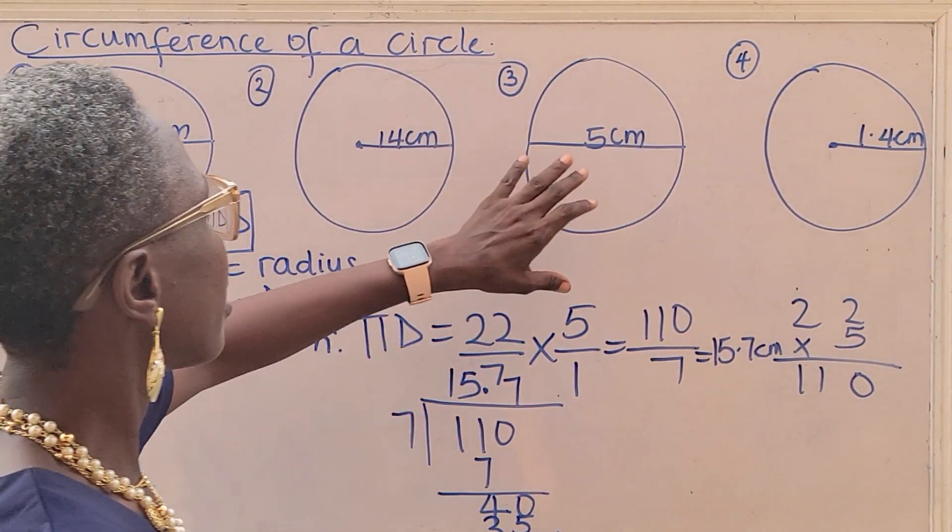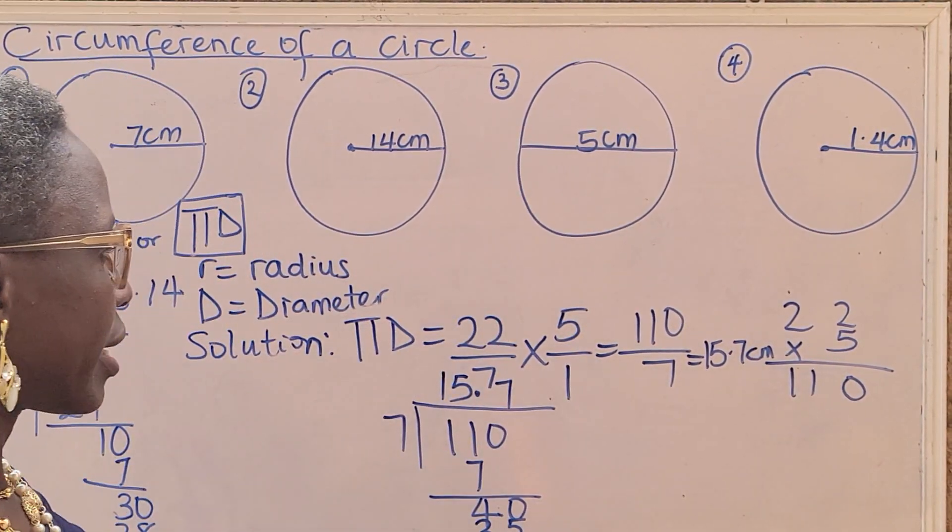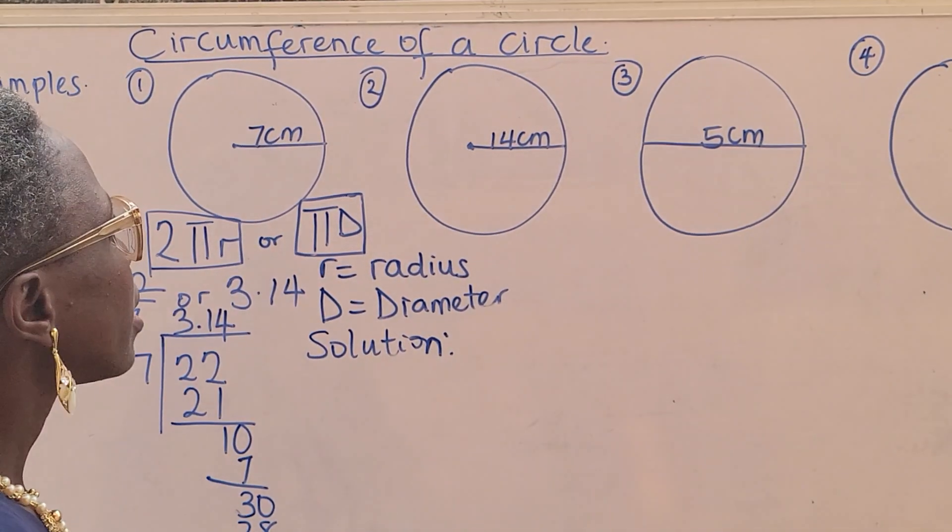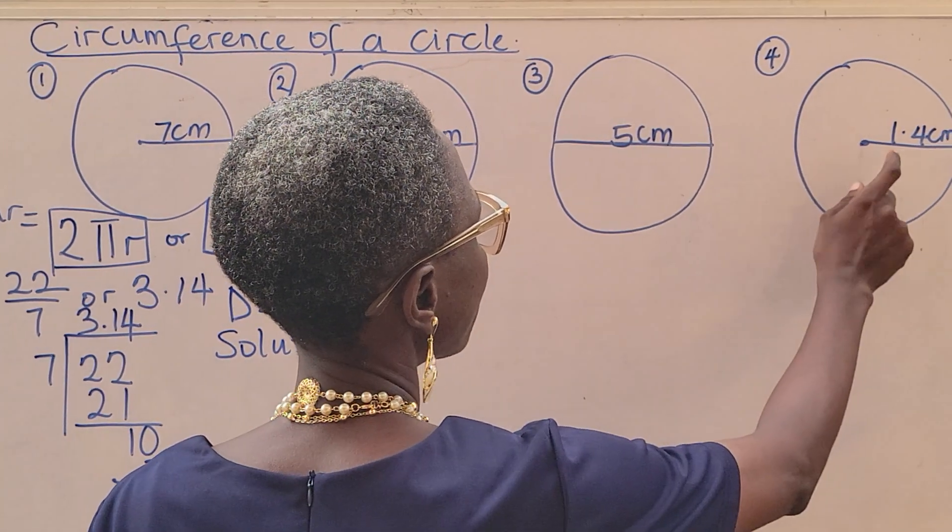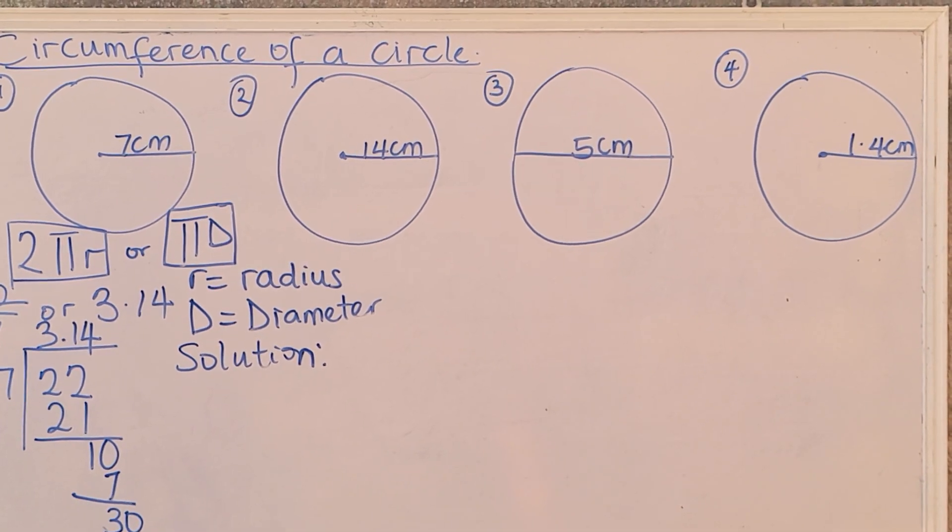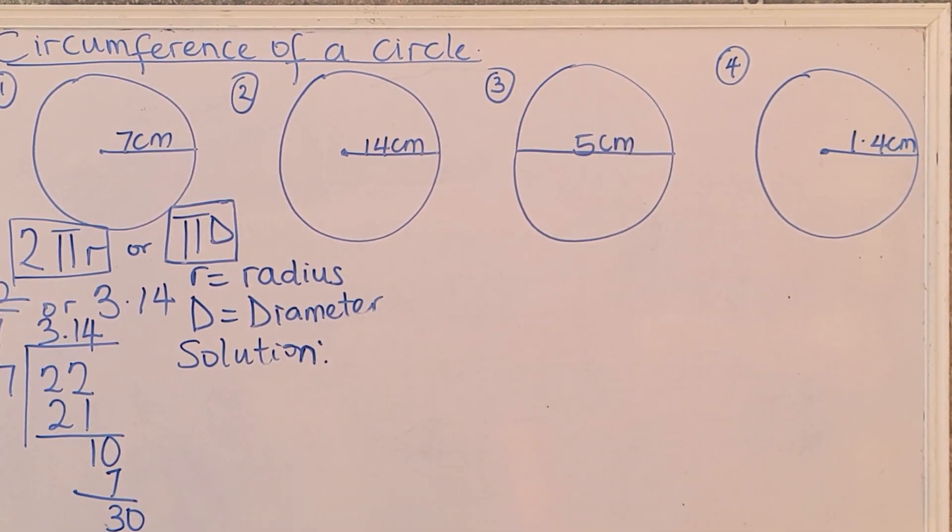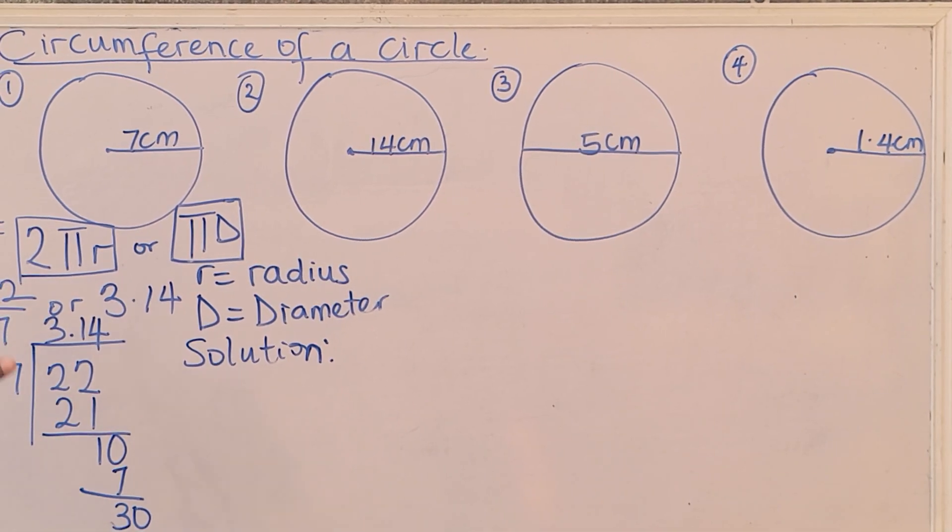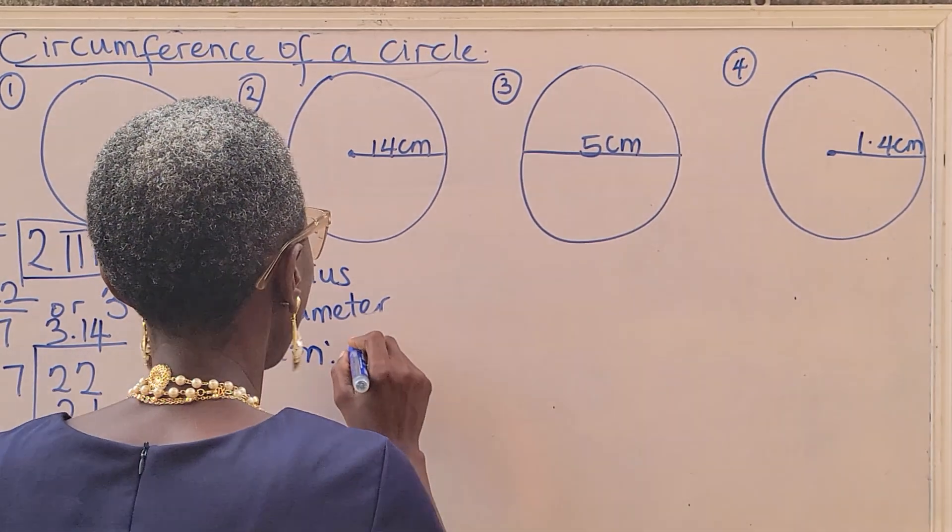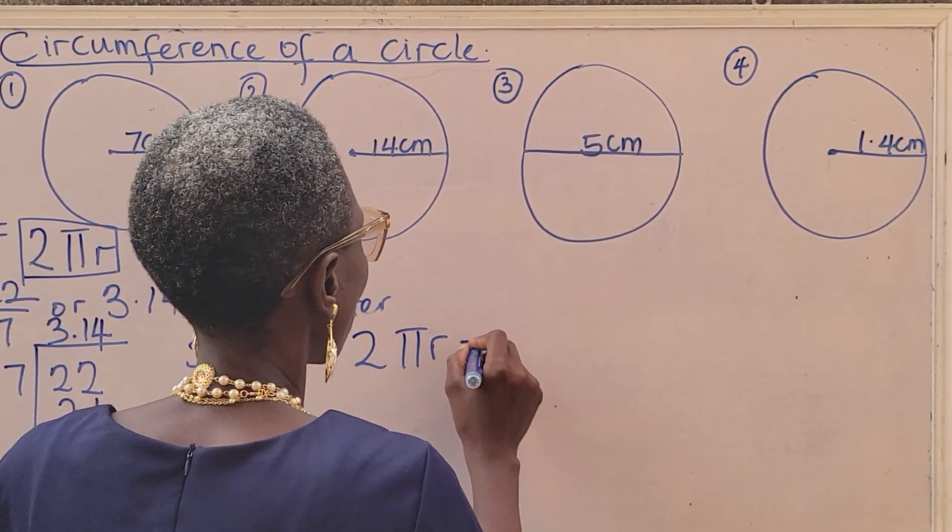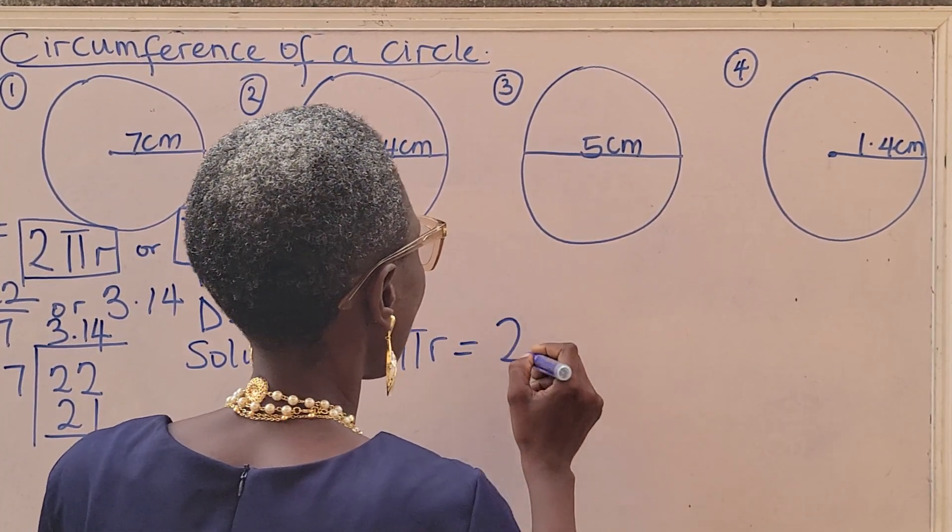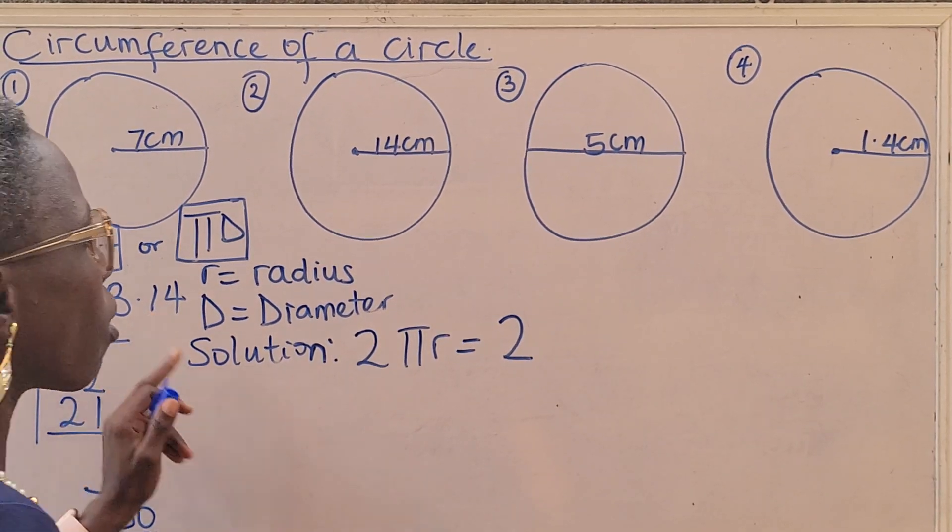So the circumference of this circle is 15.7 centimeters. The very last question on my board is the circumference of this circle, which has a radius in decimal. In this case, you can use π to be 22 over 7 or use 3.14. The formula is still the same: 2πr. I want to use the decimal so that I can make you see how to use 3.14.